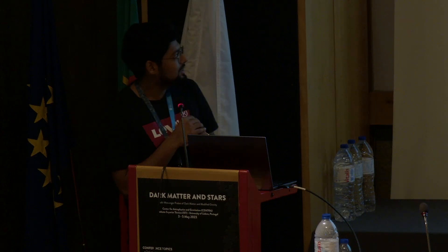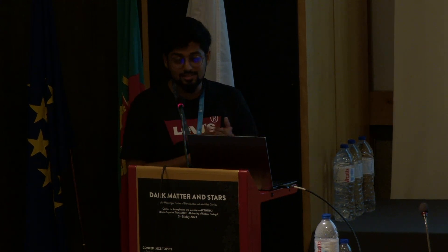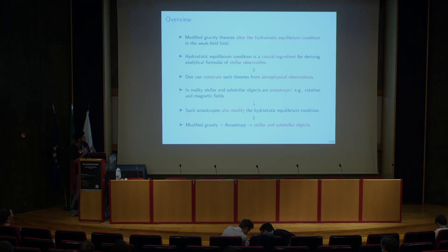However we do know that stellar and substellar objects exhibit anisotropies because of several reasons like rotation, magnetic fields, and such anisotropies also alter the hydrostatic equilibrium condition. Therefore we would like to study the implications of modified gravity theories as well as anisotropies on the stellar and substellar objects.